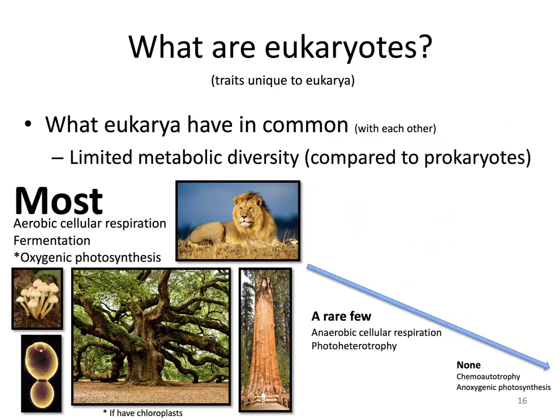Eukaryotes also have very limited metabolic diversity. They don't have any unique metabolic systems exclusive to only eukaryotes. Prokaryotes are very diverse in the types of metabolisms they can perform — every sort of metabolism we know about. Whereas eukaryotes are really limited: 99.99% are either photoautotrophs or chemoheterotrophs.